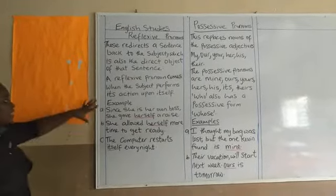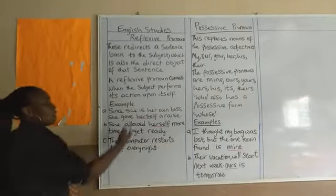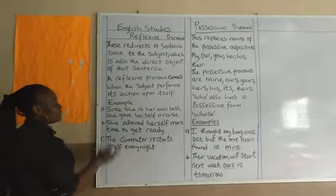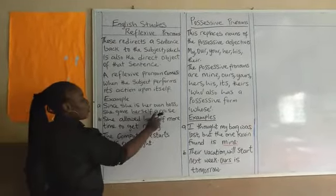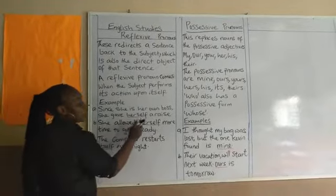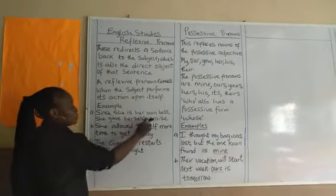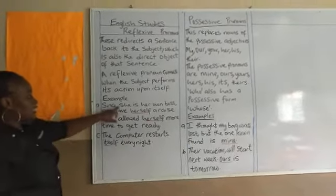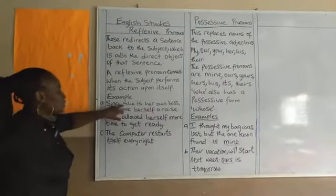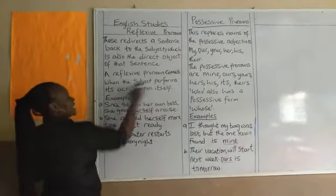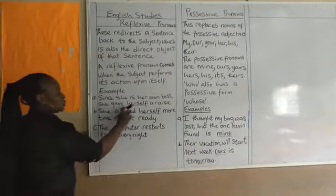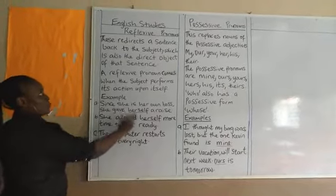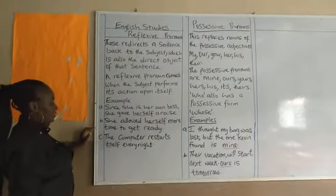I hope that's clear. So let's look at the following examples. Since she is her own boss, she gave herself a raise. Now our major subject here is 'she.' She did something to her own self — that's why we said it performs an action upon its own self. So she gave herself a raise. Herself here becomes an example of a reflexive pronoun.